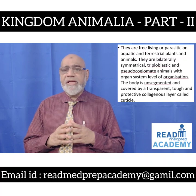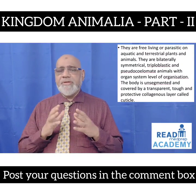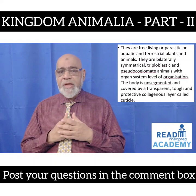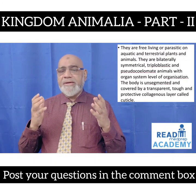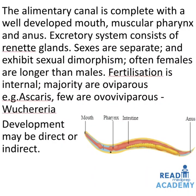They are free-living or parasitic on aquatic and terrestrial plants and animals. They are bilaterally symmetrical, triploblastic, and pseudocoelomate animals with organ system level of organization. The body is unsegmented and covered by a transparent, tough, and protective collagenous layer called the cuticle. The alimentary canal is complete with a well-developed mouth, muscular pharynx, and anus. The excretory system consists of renette glands. Sexes are separate and exhibit sexual dimorphism; often females are longer than males. Fertilization is internal; majority are oviparous — example Ascaris; a few are ovoviviparous — example Wuchereria. Development may be direct or indirect.